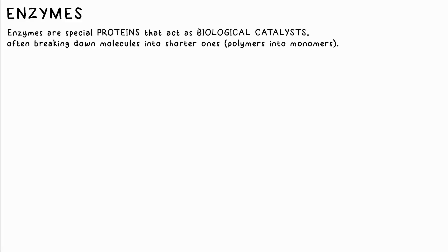Enzymes are biological catalysts, some of which break down larger molecules into smaller ones that can then be absorbed by the villi in your small intestine into the bloodstream, to be transported to every part of your body. For example, amylase is the enzyme that breaks down starch into glucose. It's found in your small intestine and saliva.